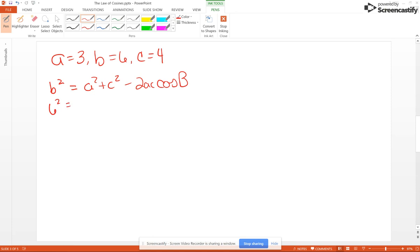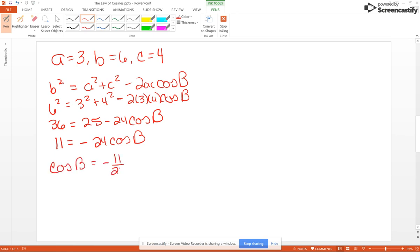This is going to be 6² = 3² + 4² - 2 × 3 × 4 cos B. So this becomes 36 = 25 - 24 cos B. Subtract 25, you get 11 = -24 cos B. So cos B is going to be -11/24, and B will be the inverse cosine of -11/24, and that will give you approximately 117.3°.